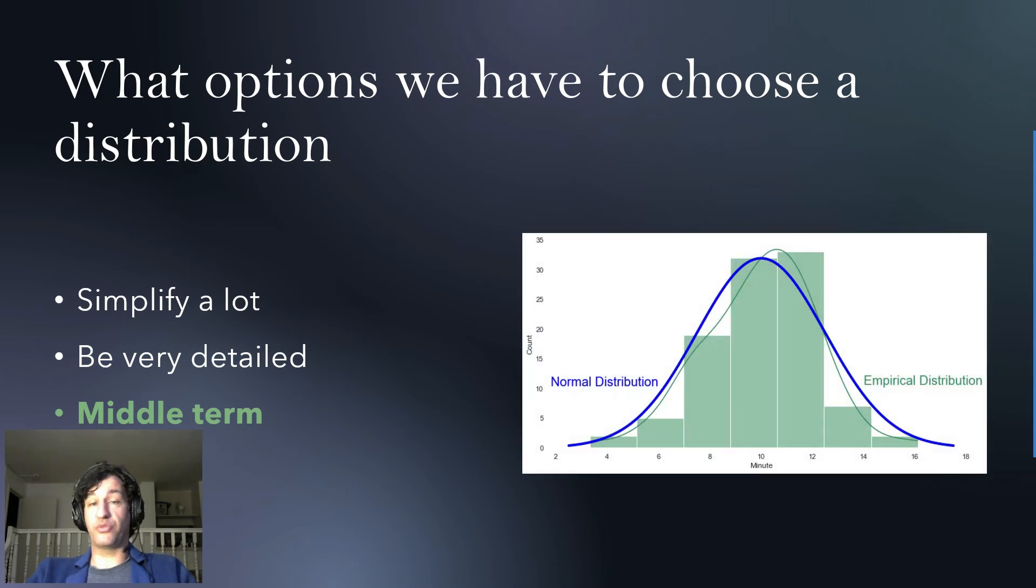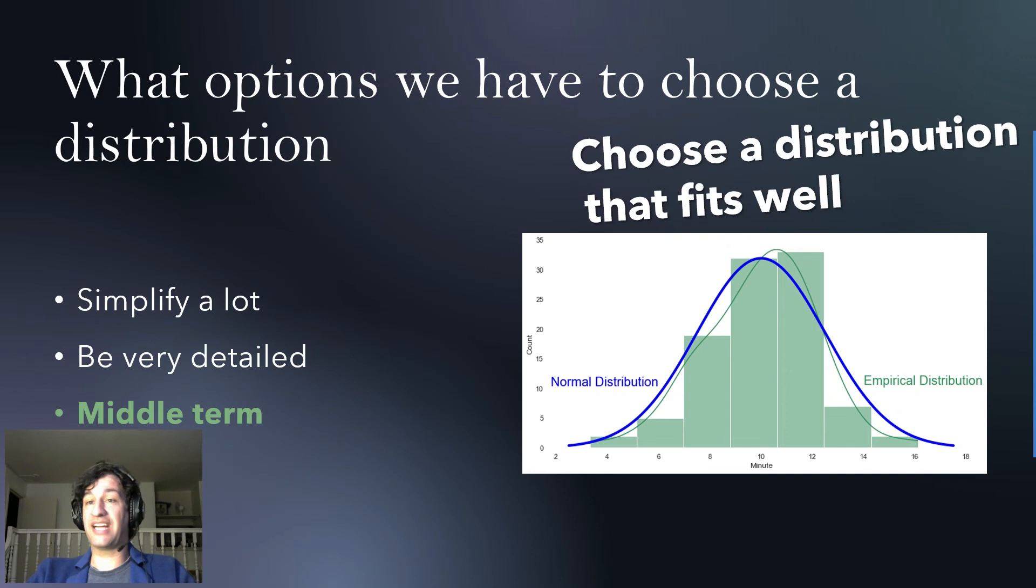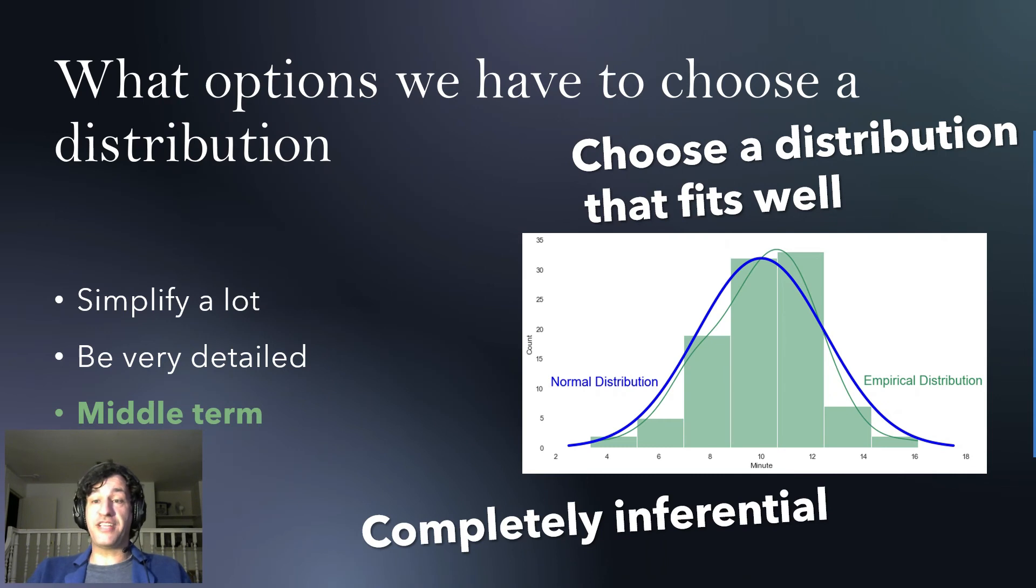And the other one is what we have been talking so far, which is you have a distribution that will fit the empirical data, and our objective is to choose a distribution that fits well. Now, this method is completely inferential and it's an art, as we said before.